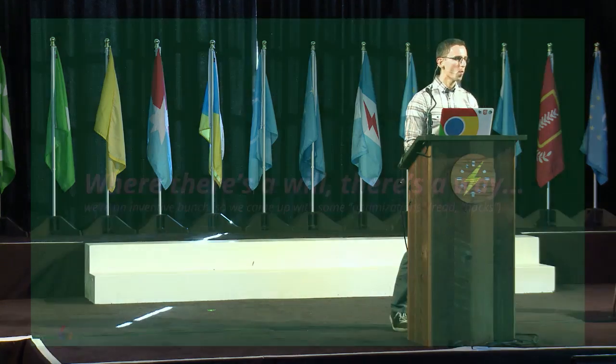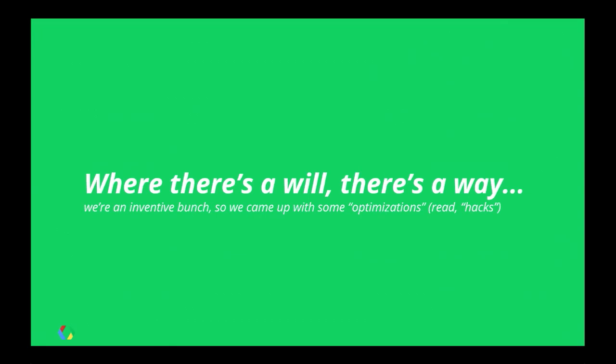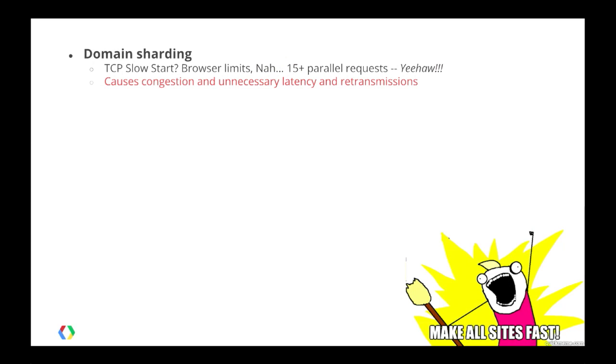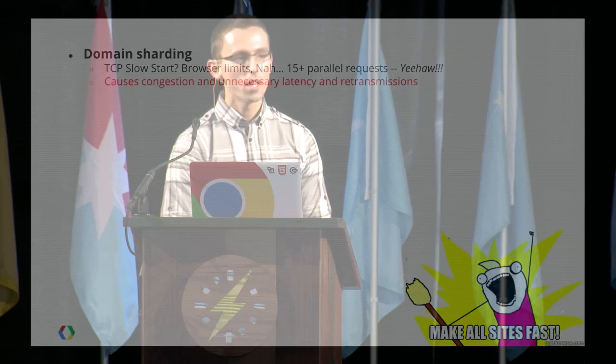There are a lot of problems, but we're an inventive bunch. We've popularized a lot of these workarounds as optimizations — I like to think of them as hacks. Hopefully in the future we shouldn't have to do them. Domain sharding: who said we should limit ourselves to six connections per origin? We'll just have many origins so I can download 60 kitten images in parallel. Turns out, for slow clients and especially mobile clients, that actually causes a lot of retransmissions at lower layers at TCP. So we're actually congesting these links, and while it doesn't show up on your desktop where you're doing your testing, it is hurting the users you're probably trying to optimize for.